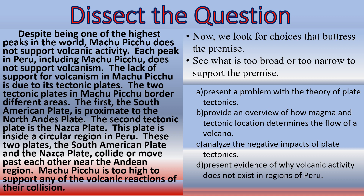The lack of support for volcanism in Machu Picchu is due to its tectonic plates — the South American plate is proximate to the North Andes plate. So choice A is too broad; scratch it. Choice B — do we provide an overview of how magma and tectonic location determines the flow of a volcano? That hasn't even been mentioned, so skip it. Choice C — analyze the negative impacts of plate tectonics. Are we really doing that? We're talking about plate tectonics and their relationship to Machu Picchu, but that's still too broad.